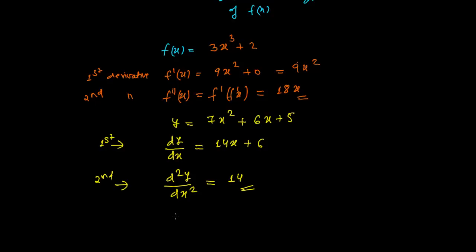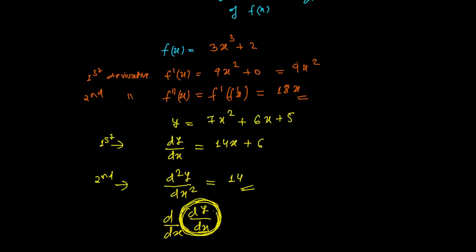You might be getting confused about the notation d²y/dx². It is actually the derivative of dy/dx with respect to x — dx times dx we write as dx². So the derivative of y with respect to x was our first derivative, and now we find the derivative of that derivative. It may feel a little strange, but that's what it is. I'll be doing one more problem in the next video. Goodbye.